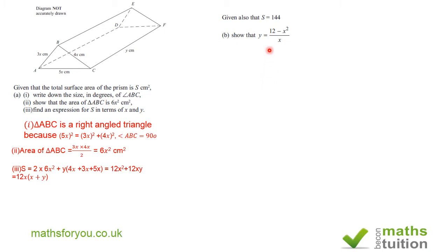Moving on. We've got that now and it says, given also that S is equal to 144 centimeters squared. Okay, show that Y is equal to 12 minus X squared divided by X there. That's what I've got. So S is equal to 12X into X plus Y. And S is 144 centimeters squared. So 144 is equal to 12X squared plus 12XY. Because if you multiply these brackets here by 12X, you get 12X squared and 12XY. So that's 12 into X squared plus XY.